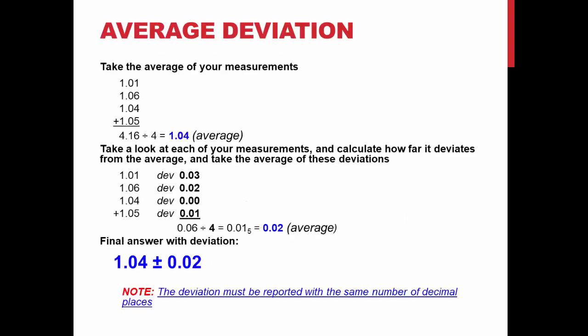In order to determine the average deviation, you first take the average of your measurements by adding all of the trials and dividing by the number of trials you completed. Next, you look at each of your measurements and calculate how far it deviates from the average. Then you take the average of these deviations. In this example, the average deviation is 0.02. Your final answer with deviation should be the average of your trials plus or minus the average deviation. Note: the deviation must be reported with the same number of decimal places.